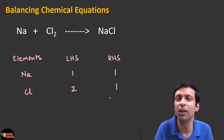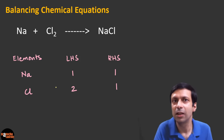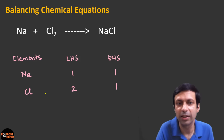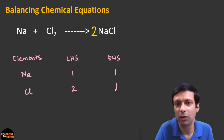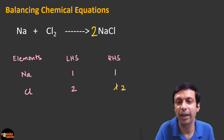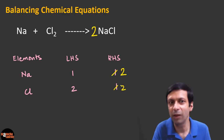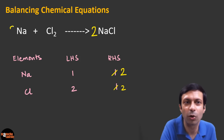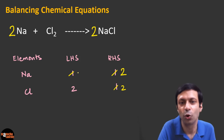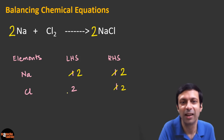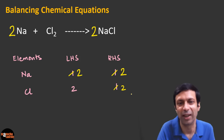Start with the element that's not balanced — chlorine. To balance it, multiply on the right by two, making it two chlorine. Chlorine gets balanced but we've disturbed sodium, which becomes two on the right. We can still fix sodium by multiplying by two on the left, so sodium also gets balanced. Now the equation is balanced: two sodium on the left, two on the right, two chlorine on the left, two on the right. This is a perfectly balanced chemical equation. You must always balance your chemical equations — never leave them unbalanced.